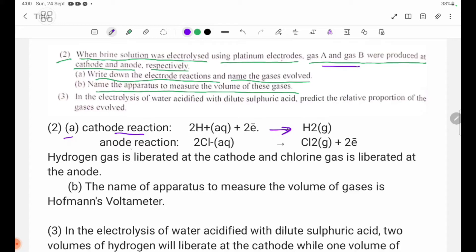Anode reaction: 2Cl- forms Cl2 gas plus 2 electrons. Hydrogen gas is liberated at the cathode and chlorine gas is liberated at the anode.